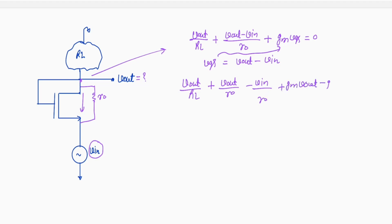So we will simplify this equation. This will be Vout by Vin equal to Gm plus 1 by R0 divided by Gm plus 1 by R0 plus 1 by RL.